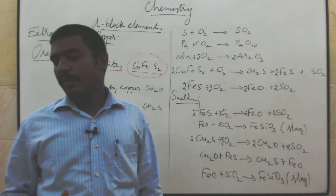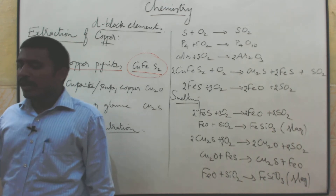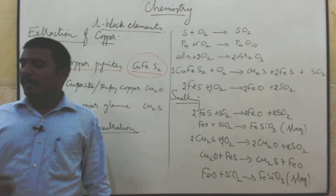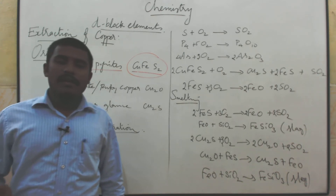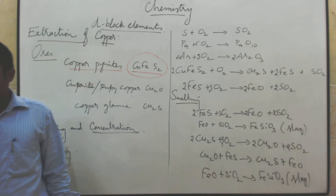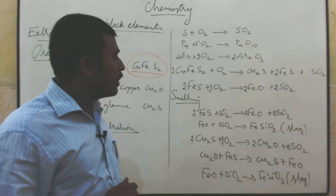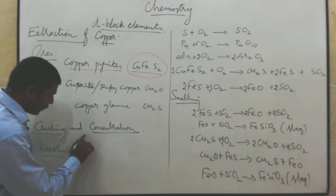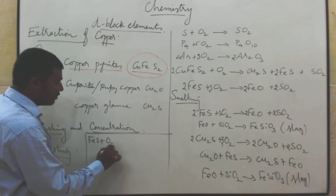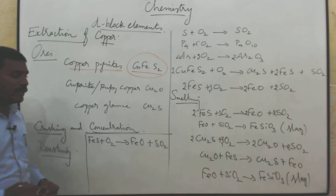The next process is Bessemerization. Through Bessemerization, the sulphides are heated with hot air under fine sand. Now all the impurities like sulphur, arsenic, and antimony escape as their volatile oxides. The iron sulphide reacts with air to give iron oxide plus sulphur dioxide.